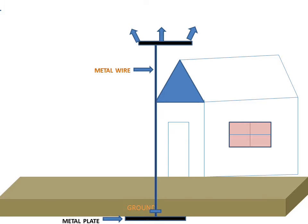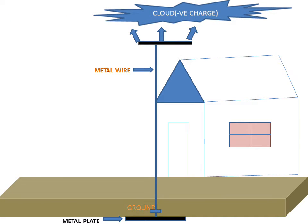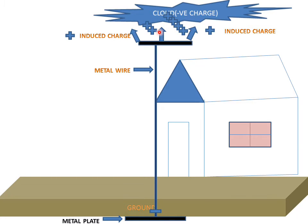Now, what will happen? When a cloud comes and contacts with these point conductors, the cloud is a negative charge. Positive charge will be induced on the conductors, and by the inducing of positive charge, a positive wind will be generated by the conductors, and they will neutralize the negative charge of the cloud and prevent the building.